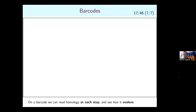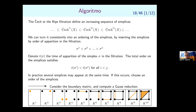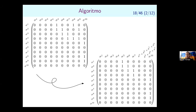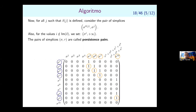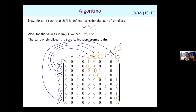In conclusion, the persistence barcode lets you read the homology at each step of the filtration and see how features evolve — which persist and which do not. The algorithm for computing the persistence barcode is essentially the same as for homology: you build a boundary matrix, insert simplices one by one in the order they arrive in the filtration, perform a column reduction, and in the reduced matrix identify the bars of the barcode.